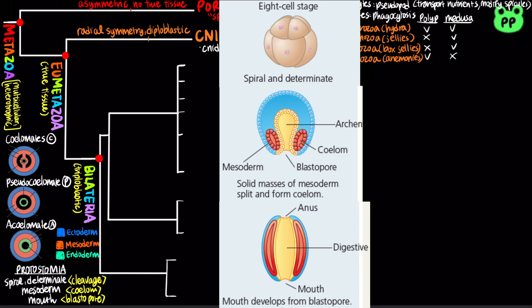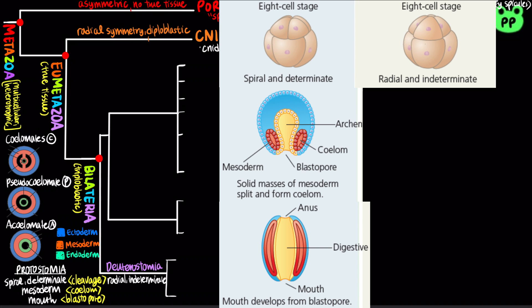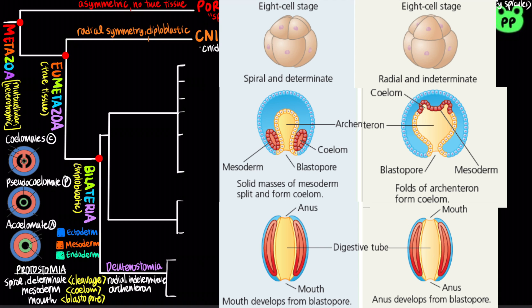In deuterostome development, cleavage is radial and indeterminate, meaning each cell in the early stages retains the capacity to develop into a complete embryo, making identical twins possible. Folds of the digestive cavity known as the archenteron form the coelom, and the anus develops from the blastopore.